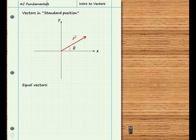Vectors that have the same magnitude and direction are said to be equal. Note that the vectors need not have the same location.